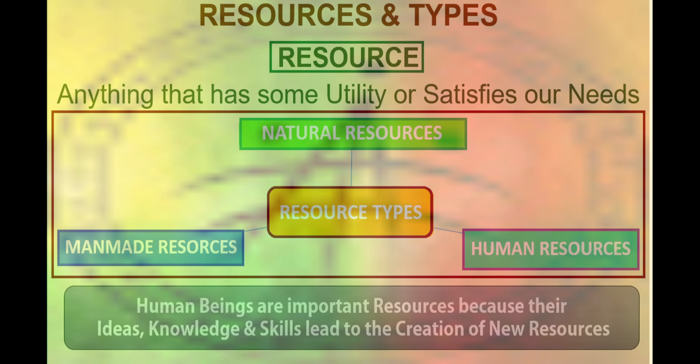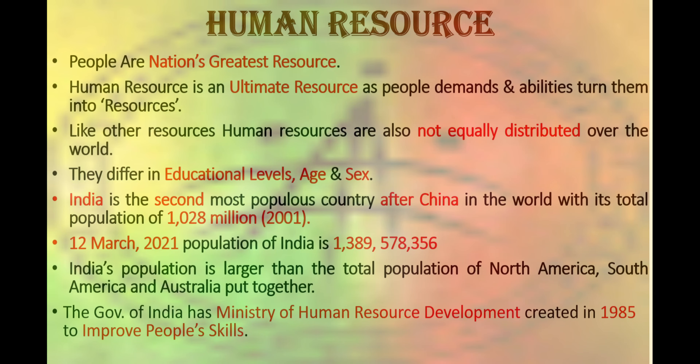The third type is human resources. Human resources include human beings. Human beings are an important resource because their ideas, knowledge and skills basically lead to the creation of new resources. They are the nation's greatest resources — the ultimate resource — as people's demand and ability turns any object into a resource. However, like other resources, they are not equally distributed all over the world and differ in educational levels, age and sex.